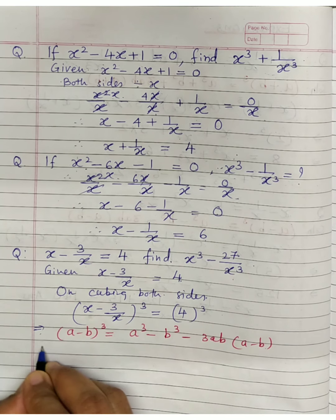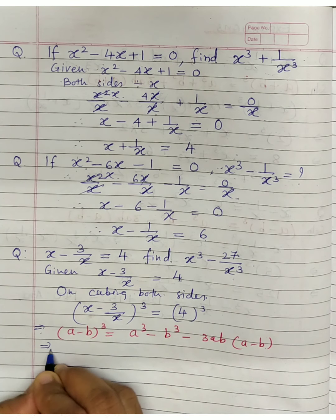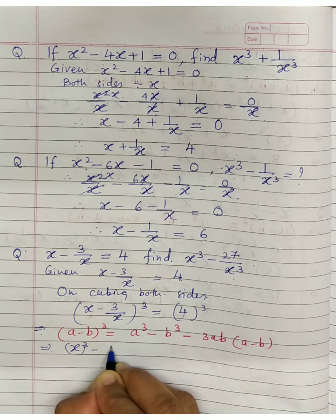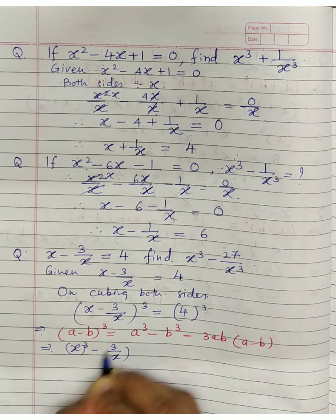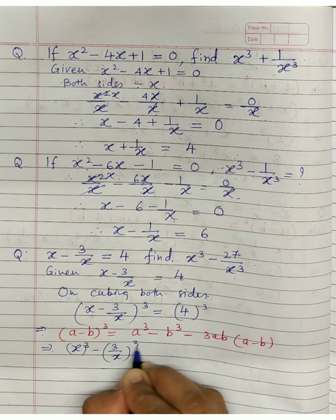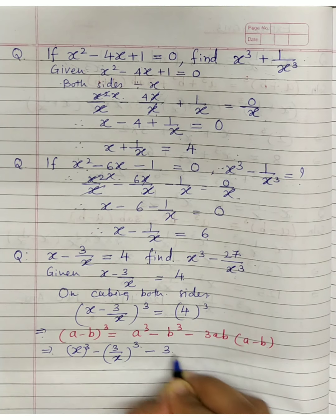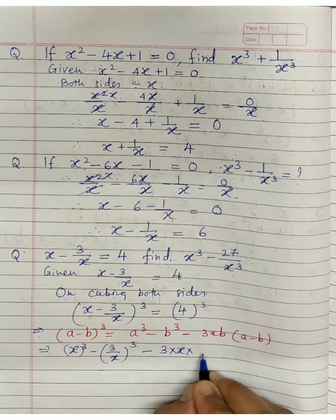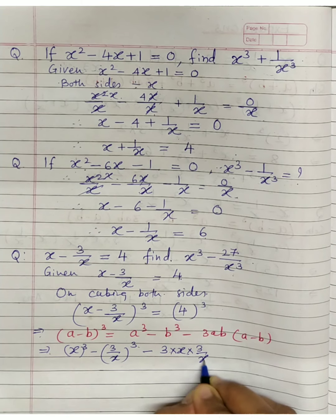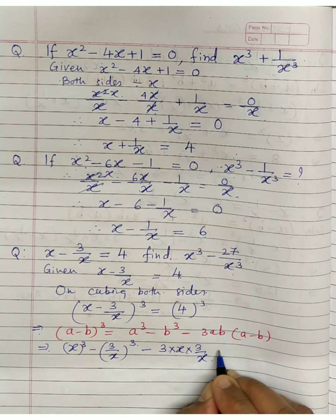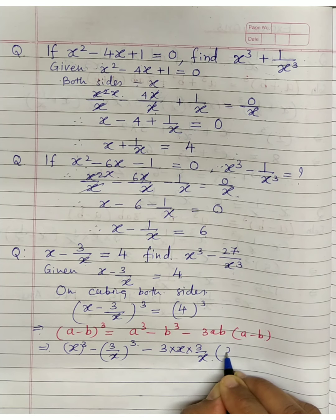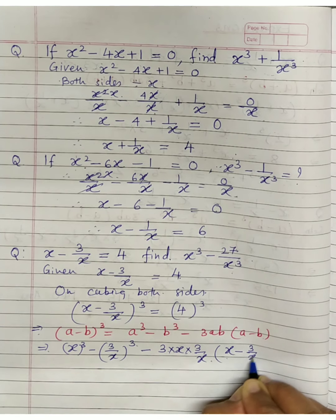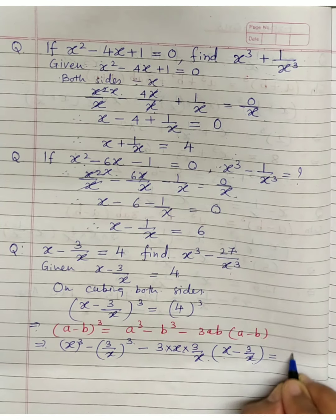The left hand side becomes: x cube minus 3 upon x whole cube, minus 3 into x into 3 upon x, bracket x minus 3 upon x, equals 4 cube. Note it's not 1 upon x here — it's 3 upon x, so the ab product is 3, not 1. The right hand side is 64.